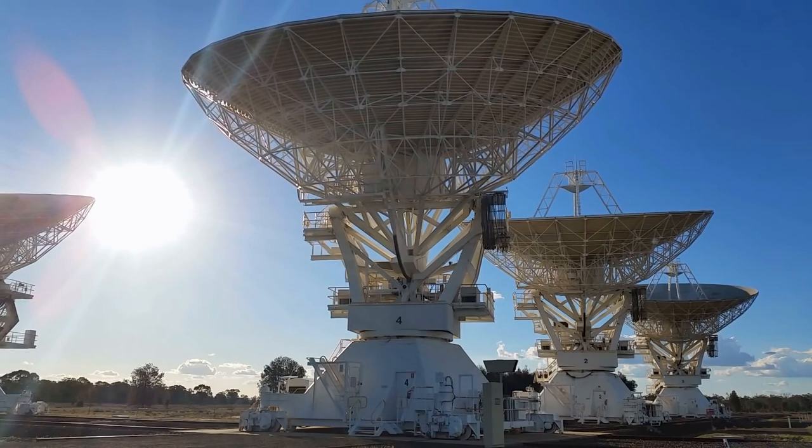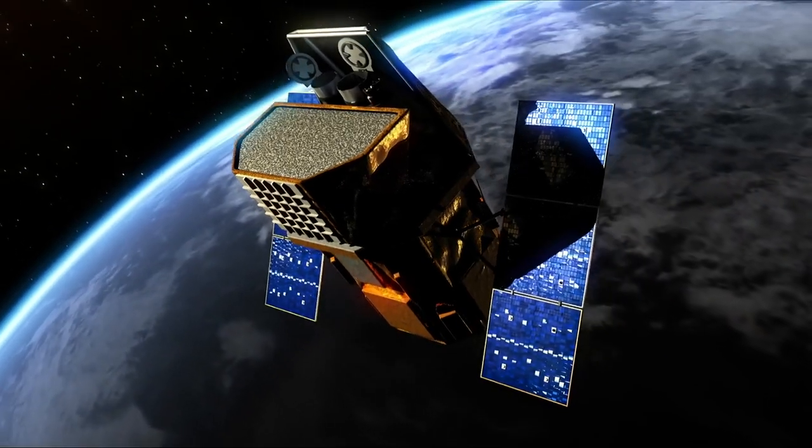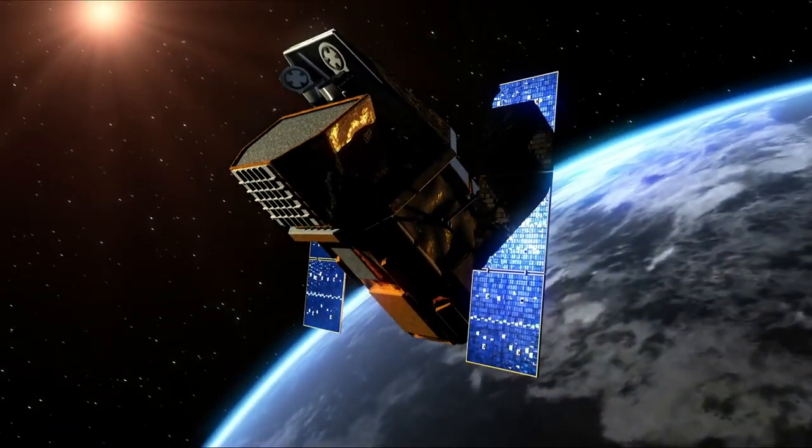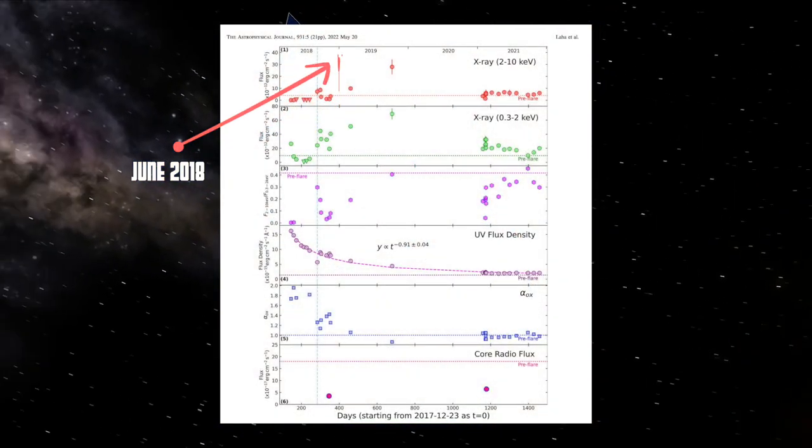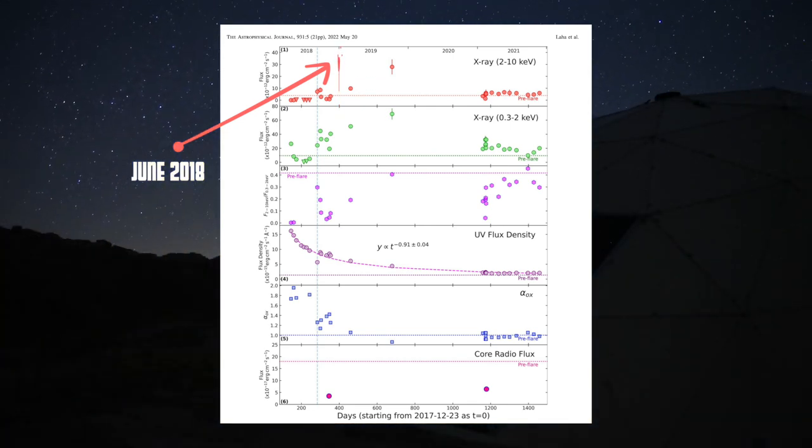After this, astronomers knew that they needed to continue to keep an eye on it and study this galaxy. Then, a few months later in June, the X-ray emissions disappeared, knocking astronomers into high gear to try and understand what had happened.